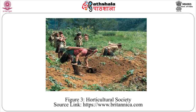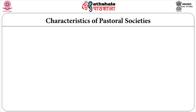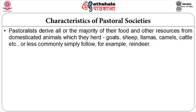Figure 3 displays the horticultural society. Pastoralists derive all or the majority of their food and other resources from domesticated animals which they herd — goats, sheep, llamas, camels, cattle, etc. — or less commonly simply follow, for example reindeer. Pastoralism is really a form of gathering: pastoralists herd herbivores that graze on grasses or browse on bushes that humans cannot digest, and then the people live on the animals.